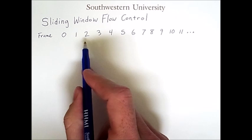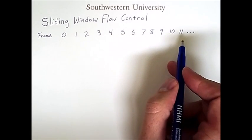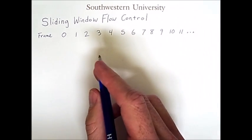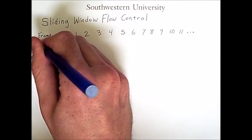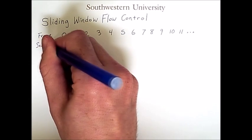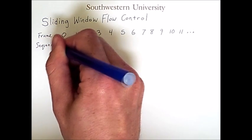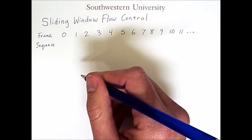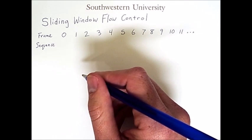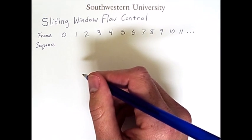Now while we'll be sending several different and unique frames, we're also going to assign a sequence number to each frame, which is a little number that will be part of the header information in the frame. And we're only going to use a small number of bits for the sequence number.